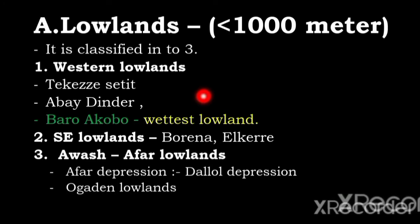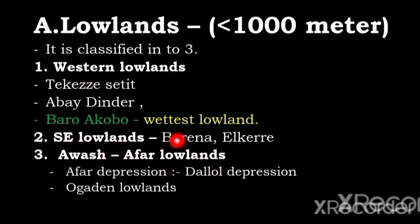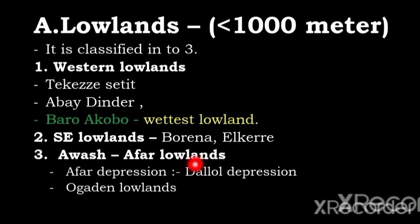Lowlands have an elevation of less than one thousand meters. They are classified into three: Western Lowlands, South-Eastern Lowlands, and Awash-Afar Lowlands. Western Lowlands include Tekeze-Setit, Abay-Binder, and Baro-Akobo Lowlands. South-Eastern Lowlands include Borena and Ogaden Lowlands. Awash-Afar Lowlands include the Afar Depression.